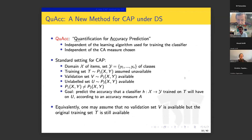The method we present, called QUAC, has two interesting characteristics. First, it is independent of the learning algorithm used for training the classifier — it works for SVMs, deep learning, and logistic regression. Second, it is independent of the classifier accuracy measure chosen — at least in theory, it works for vanilla accuracy, F1, balanced accuracy, and others. QUAC stands for quantification for accuracy prediction.